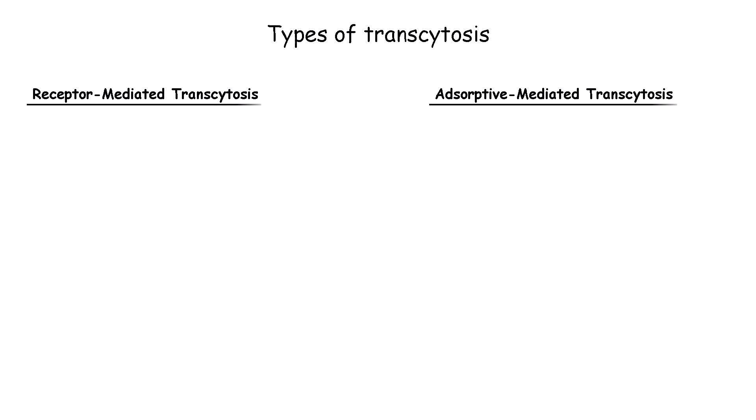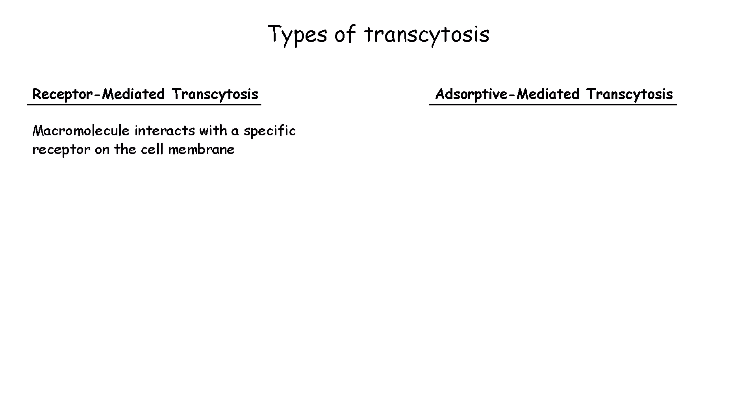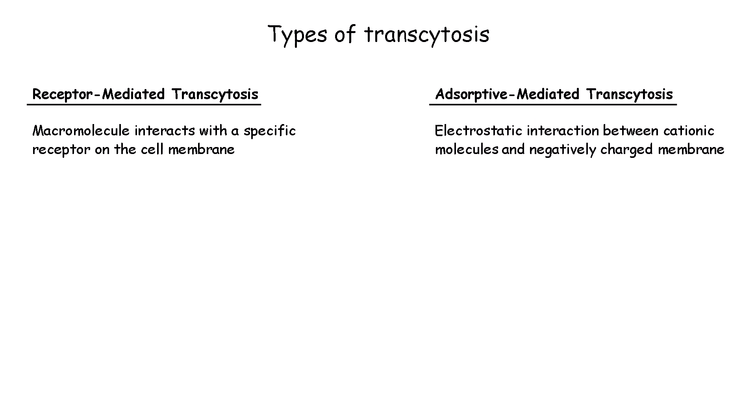There are distinct mechanisms employed in transcytosis. One is receptor-mediated and the other is adsorptive-mediated. In receptor-mediated transcytosis, the process begins when a macromolecule binds to a specific receptor on the cell surface. In contrast, adsorptive transcytosis depends on an electrostatic interaction between the molecule and the membrane. This mechanism is most common for positively charged cations, as they are attracted to the negatively charged membrane. These two different mechanisms mean that receptor-mediated transcytosis is highly specific, while the adsorptive type is much less specific.